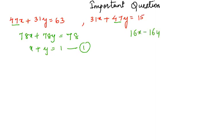16x minus 16y equals 48. Taking 16 common on both sides, we get x minus y equals 3. Once we have two equations, we can use elimination or substitution. Let us use elimination method.